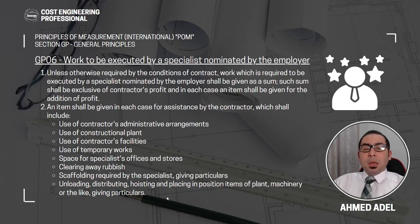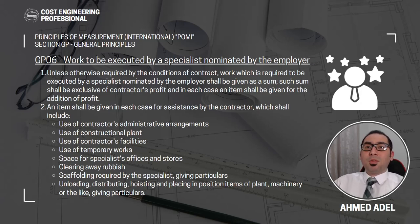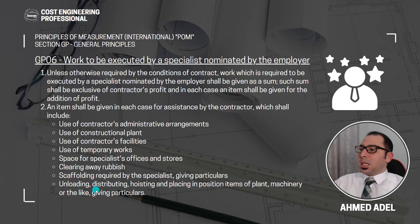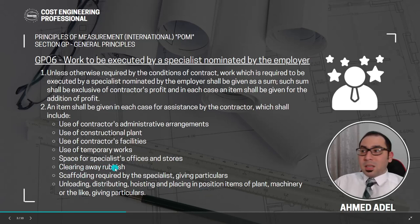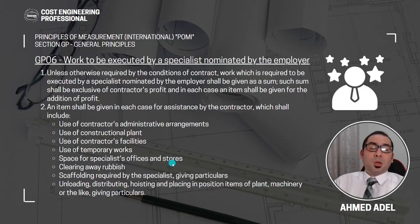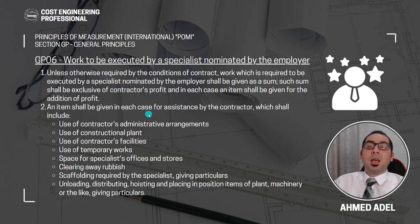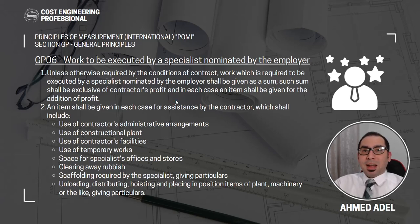For example, if the elevator is a provisional sum item executed by a specialist nominated by the employer, this item will cost say one hundred thousand — that's the money paid to the specialist. But for the specialist to do his work, he needs assistance from the main contractor: scaffolding, unloading, distributing, hoisting, placing materials, clearing away rubbish, and space for his offices and stores, since he is an outsider to the project. That's why we keep this second item.